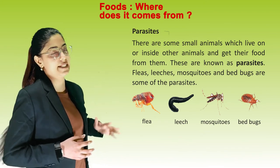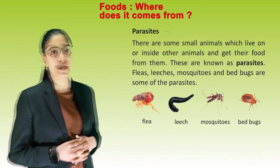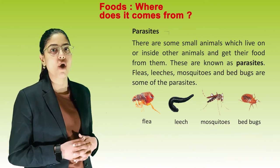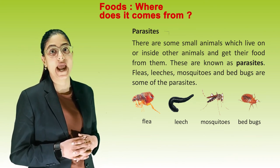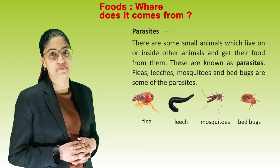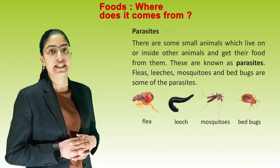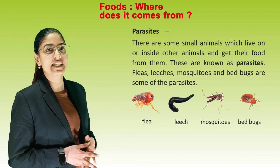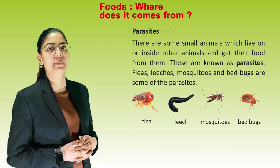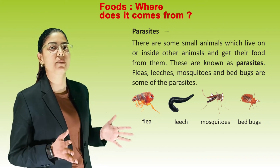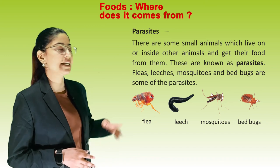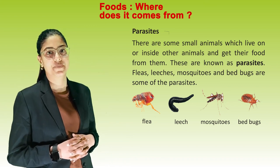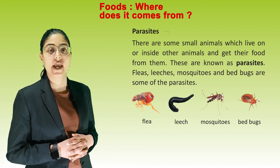Next are parasites. There are some small animals which live on or inside other animals and get their food from them — these are known as parasites. Fleas, leeches, mosquitoes, and bed bugs are some of the parasites. These are some pictures of parasites.